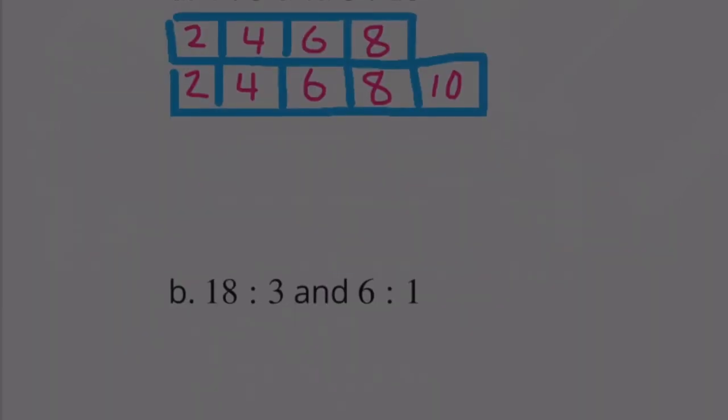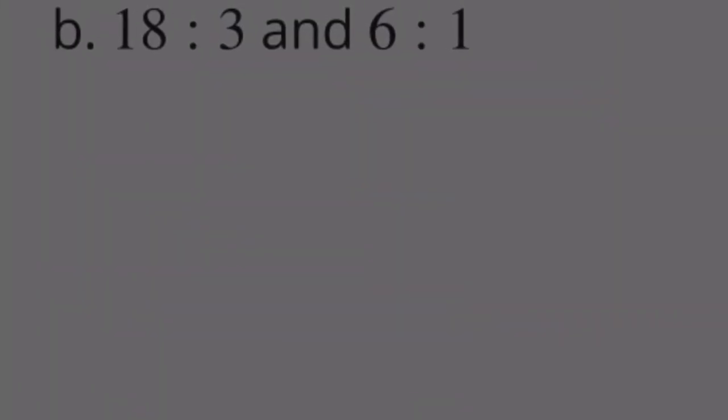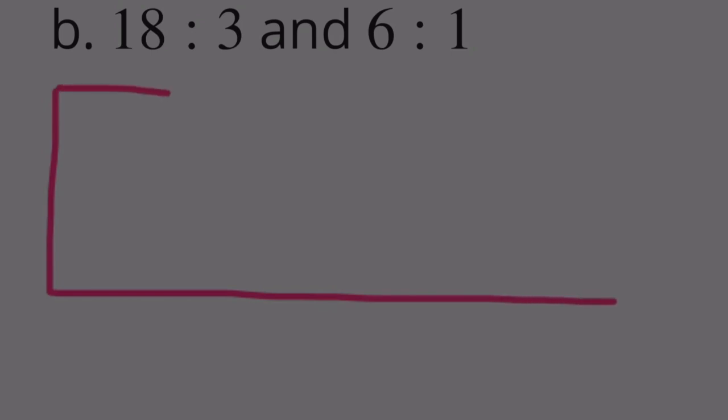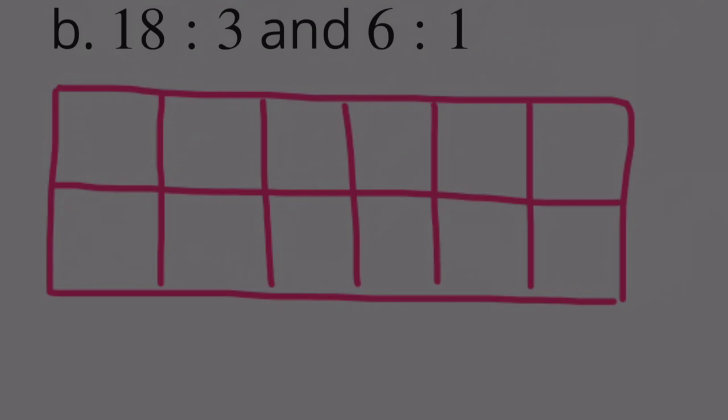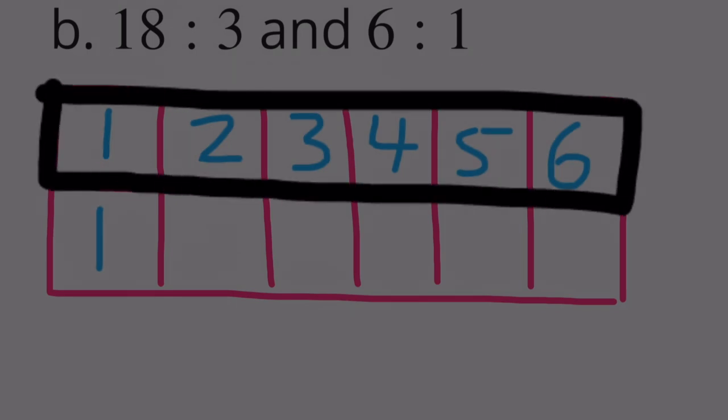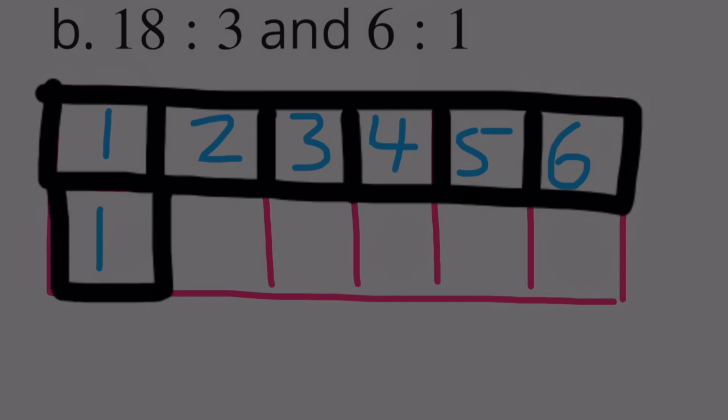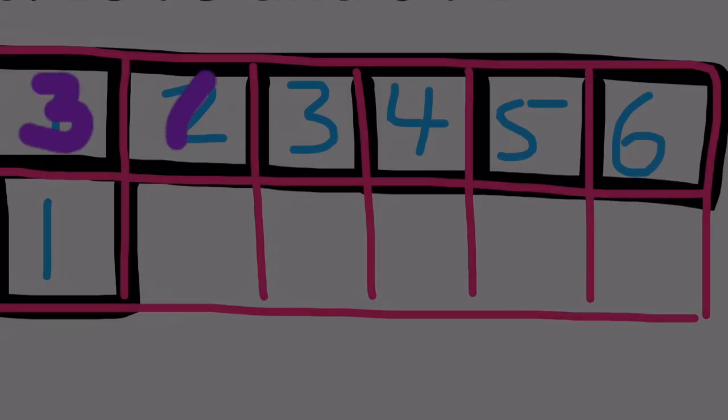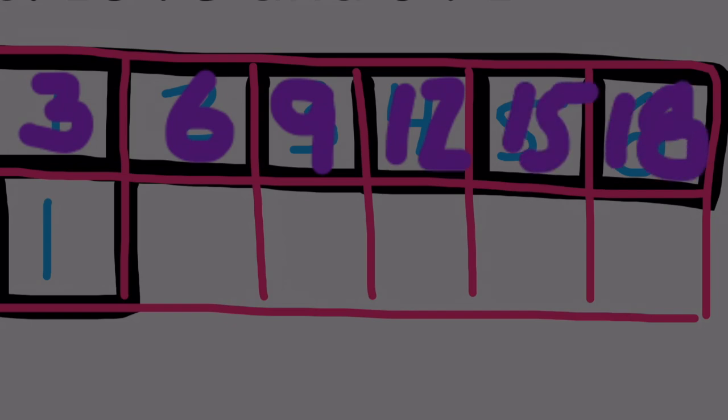Problem B: 18 to 3 and 6 to 1. Creating the diagram: 1, 2, 3, 4, 5, 6 to 1. The 6 to 1 ratio. Then 3, 6, 9, 12, 15, 18 to 3. So this worked for 6 to 1 and it works for 18 to 3.